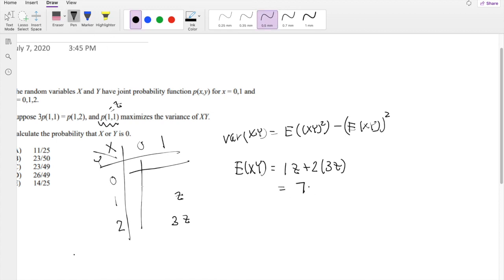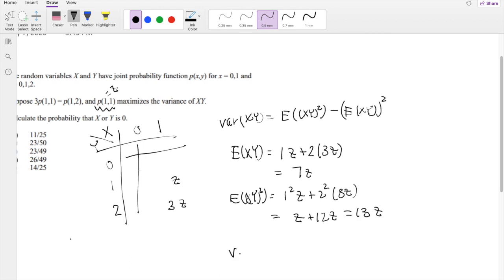Alright, now for the XY second moment, we just have to square the X value, so this will be 2 squared times 3z. So this is going to be equal to z plus 12z, which is equal to 13z. When we plug it into our variance formula, we get 13z minus 7 squared, which is 49z squared.